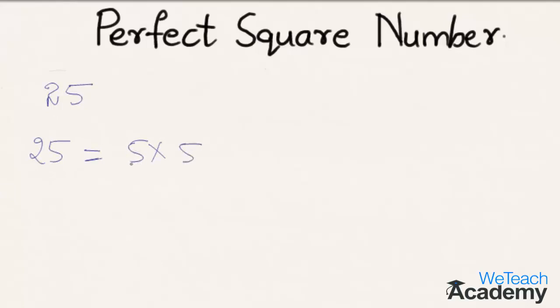So here we can say that if a number is multiplied by itself, then the product is said to be square of the number, and the number is called the square root of the product. So here we can say that square root of 25 is nothing but 5.